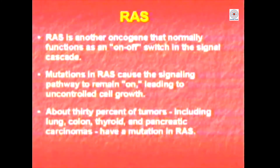About 30% of tumours including lung tumour, colon tumour, thyroid tumour, and pancreatic carcinomas all have mutations in the RAS oncogene. The conversion of proto-oncogenes to oncogenes may happen because of a mutation in the proto-oncogene, rearrangements of the genes, or it may increase the number of copies of these proteins.